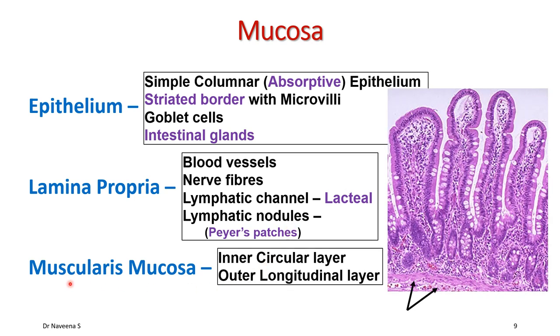The muscularis mucosa is formed by smooth muscles arranged in two layers: an inner circular layer and an outer longitudinal layer.